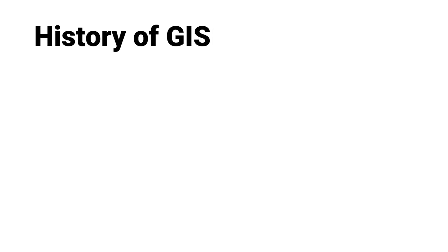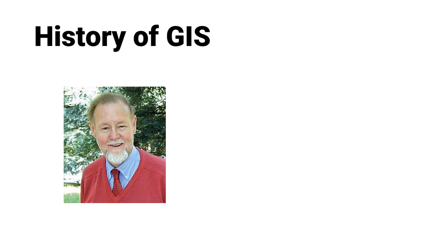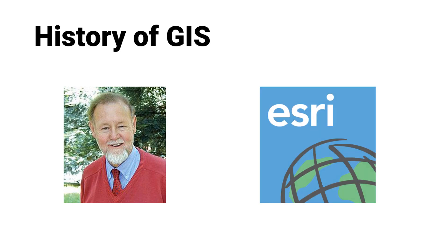History of GIS: Roger F. Tomlinson is the primary originator of modern computerized geographic information systems. While working for the federal government in the 1960s, Dr. Tomlinson started and directed the development of the Canada GIS, the first computerized GIS in the world. Tomlinson is also acknowledged as the father of GIS. In 1969, Jack Dangermond co-founded a privately held GIS software company with his wife Flora — the Environmental Systems Research Institute, also known as ESRI.